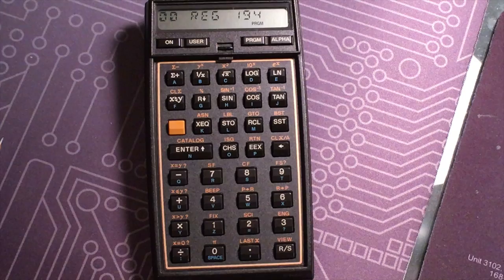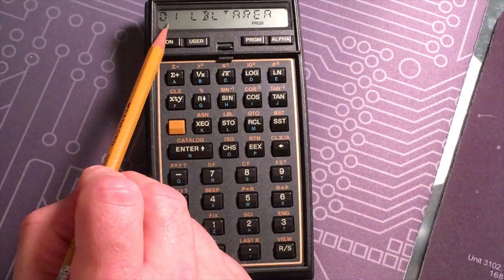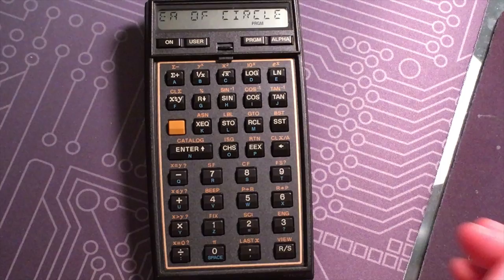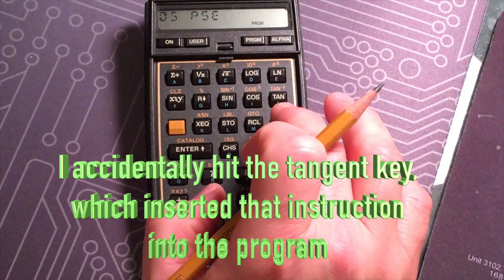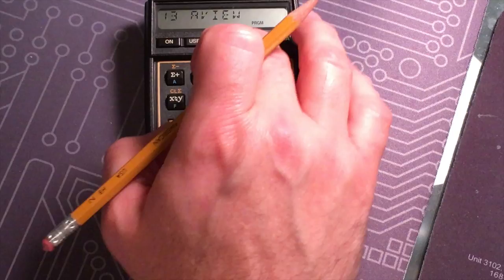If we go to one, this one's area of a circle. You have the line number and then the instruction. The first instruction is the label, the global label, and that's basically the name of the program. You can single step through these, and it shows you what the instructions are. You can get out of program mode.